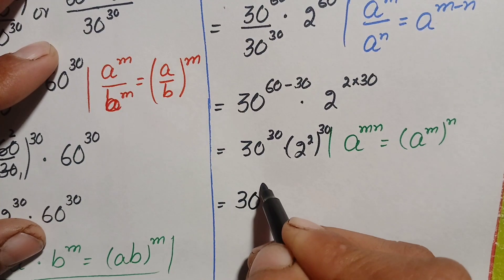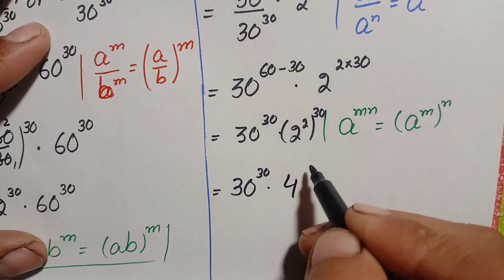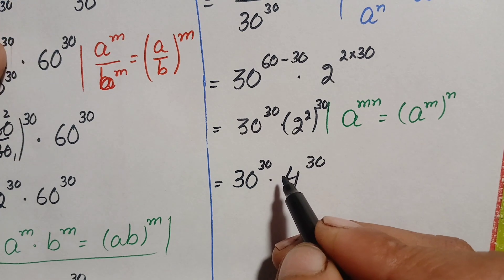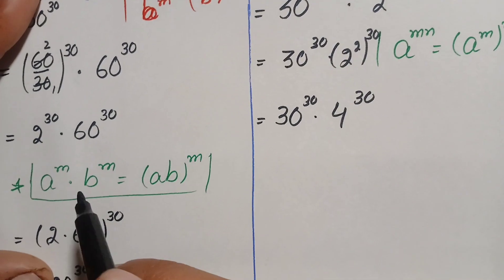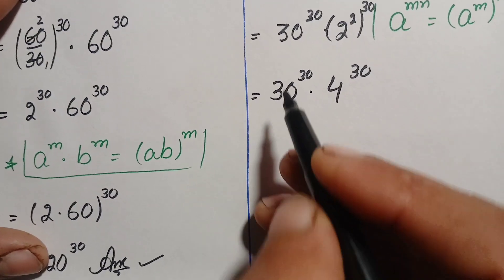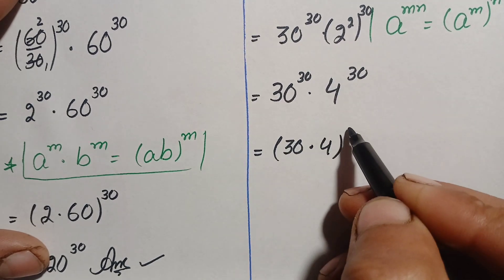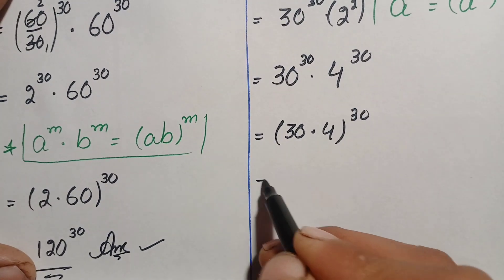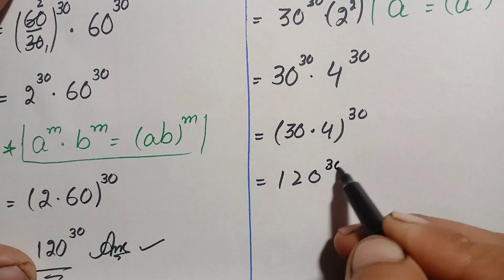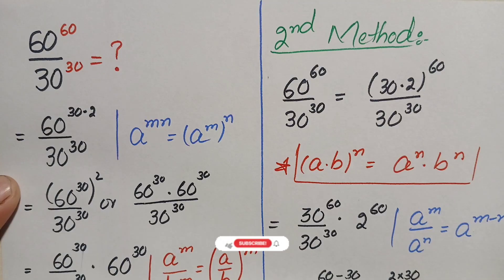We now have 30 raised to power 30 times 4 raised to power 30, since 2 raised to power 2 is 4. These two numbers have the same power, so we multiply the bases: 30 times 4 is 120. Therefore the answer is 120 raised to power 30, confirming our result from method one.